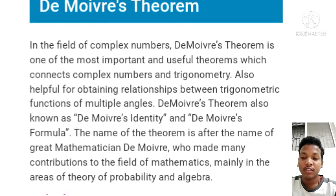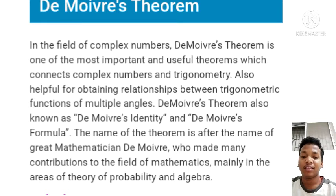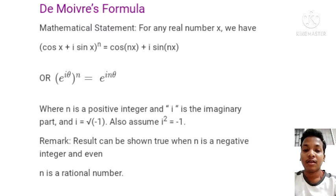Welcome to my channel. Today's topic is De Moivre's Theorem in the field of complex numbers. De Moivre's Theorem is one of the most important and useful theorems which connects complex numbers and trigonometry. It is also helpful for finding relationships between the trigonometric functions of multiple angles. The theorem has an identity and a formula, named after the great mathematician De Moivre, who made many contributions to mathematics, mainly in the areas of probability theory and algebra.